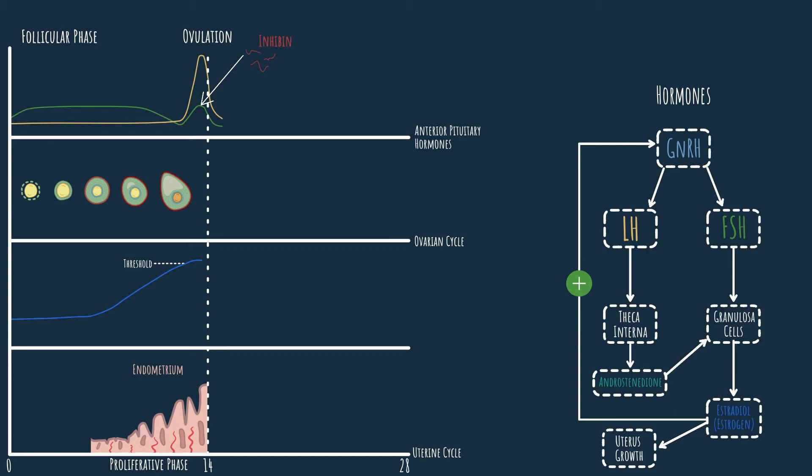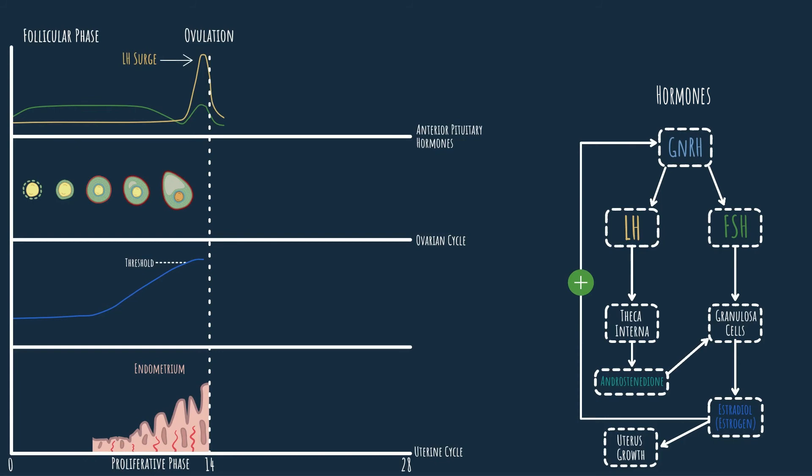LH, on the other hand, is not affected by inhibin and it experiences a huge peak. This huge peak is called LH surge and we can see that it occurs very close to ovulation. Actually, it's about 36 hours before ovulation if you want to be precise.